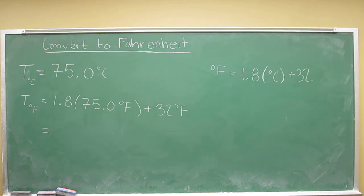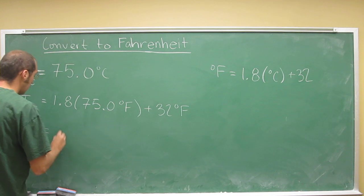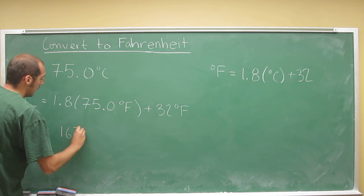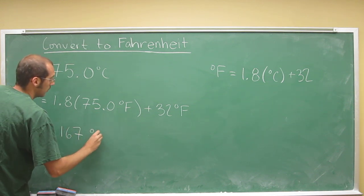But anyway, just plug it in: 1.8 times 75 plus 32. That gives you 167 degrees Fahrenheit.